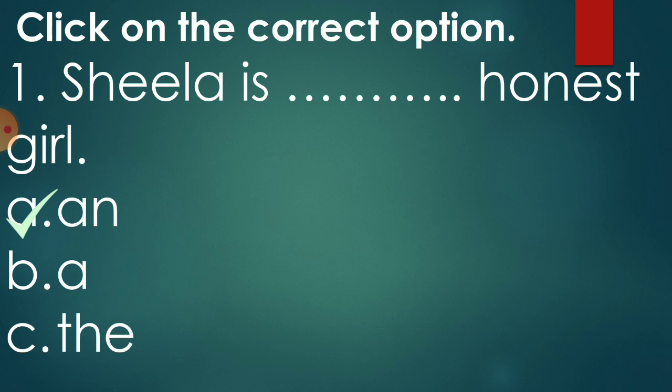Why? Because, after the blank, the word that is starting with vowel sound. Okay. So, we have studied that article AN is used before the word that starts with the vowel sound. So we have put a tick mark on option A, an. Sheila is an honest girl.